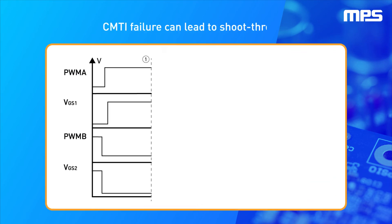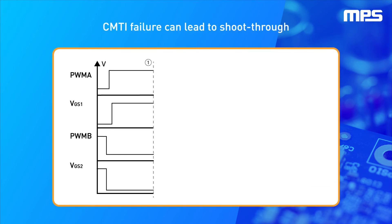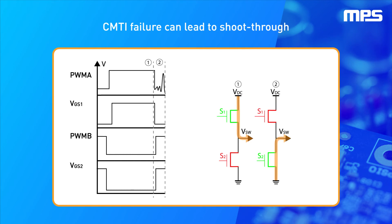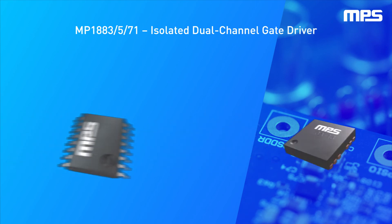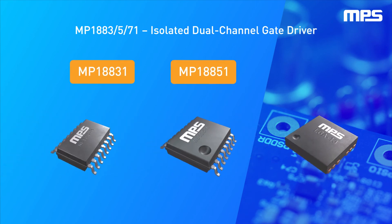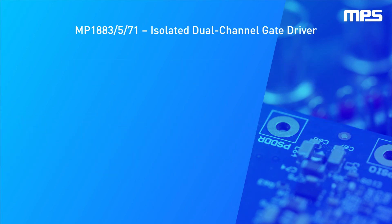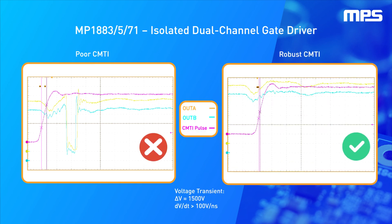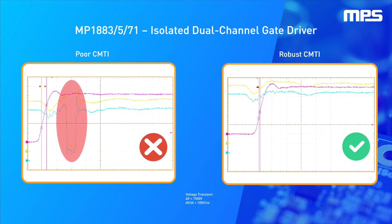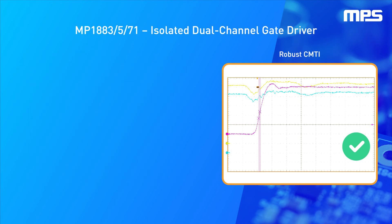For example, if the switches are implemented in a half-bridge topology, this could lead to both switches being on at the same time, causing a shoot-through current and potentially destroying the switching device. That's why MPS's MP188XX gate driver family has been designed to have CMTI rated above 100 kV per microsecond, ensuring safe operation when working at high voltages and fast switching.